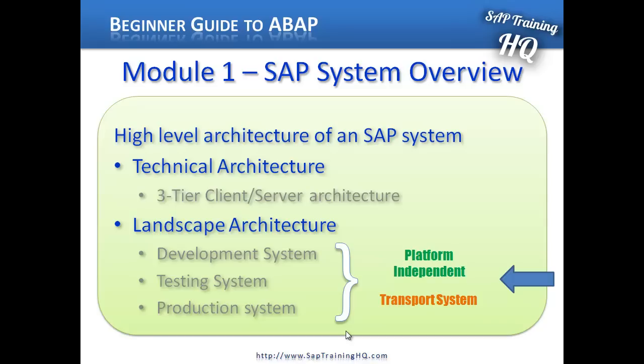If everything works out and everything passes in the test system, we then use the transport system again to move our developments or program changes into the production environment. When code goes into a production environment, that's when it's turned on and used within the business itself.